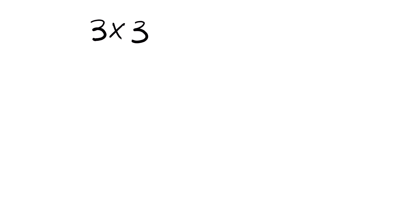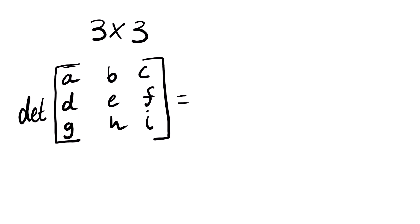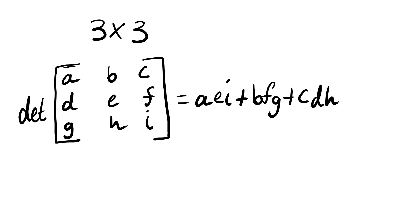Now let us look at a 3 by 3 matrix. Let us say we have matrix A, B, C, D, E, F, G, H, I. The determinant of this matrix is defined by: A·E·I, plus B·F·G, plus C·D·H,